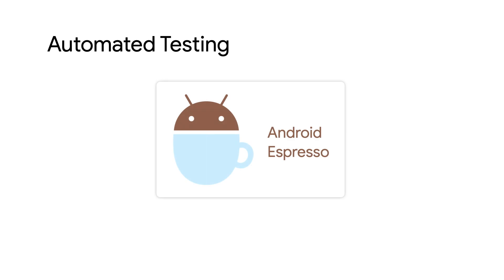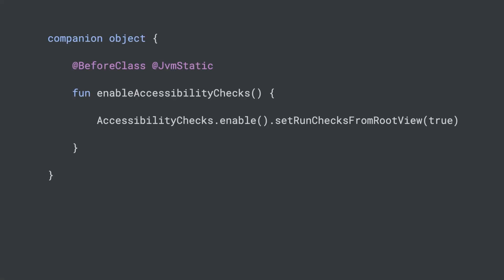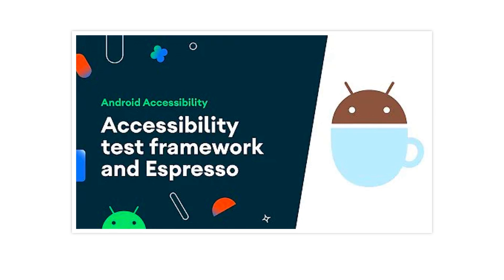Besides these tools, you can also incorporate automated testing as part of your development workflow. If you have existing Espresso tests, you can enable and configure accessibility testing using the Accessibility Checks class. With just a few lines of code, you can enable accessibility checks on the entire view hierarchy of the screen that's part of your existing Espresso test. The video Espresso and Accessibility Test Framework gives an in-depth overview on how to set up accessibility checks as part of your Espresso tests.